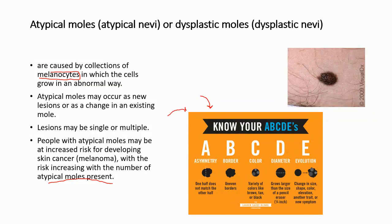It's important to recognize skin cancer and teach patients with atypical moles what to look for using the ABCDE criteria. A is for asymmetry — one half does not match the other. B is for border — uneven, ragged borders instead of smooth ones. C is for color — a variety of colors like brown, tan, and black, or a mole that changes color or gets darker. D is for diameter — grows larger than the size of a pencil eraser, greater than about a quarter of an inch. E is for evolution — changes in size, shape, color, or elevation, or a new symptom; it evolves into something it never looked like before.